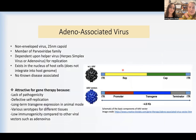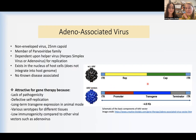So this is an adeno-associated virus. Here's the wild type virus on top and below it is the vector. For the wild type virus, it's a very non-pathogenic virus, very small. It depends on other viruses to replicate, and it exists in the host cell nucleus but doesn't integrate into the host cell genome. That's important because viruses that integrate can cause new mutations and damage to the genome, and there's no disease associated with this virus. What you do to make a vector is you take out all the viral genes and put in your gene of interest under a promoter that's going to be active in the tissues you want.